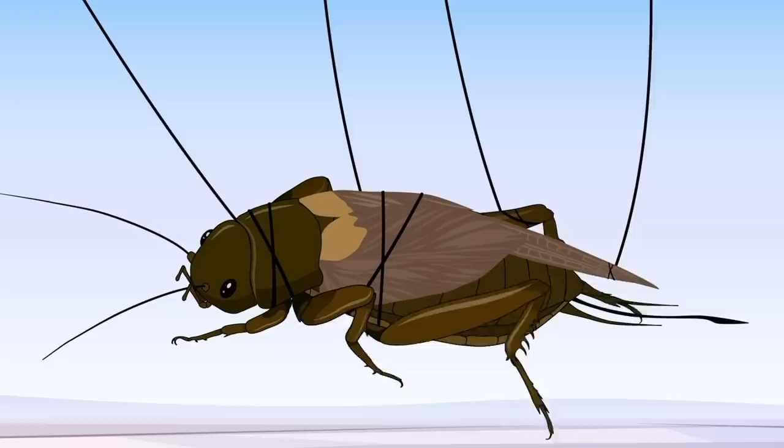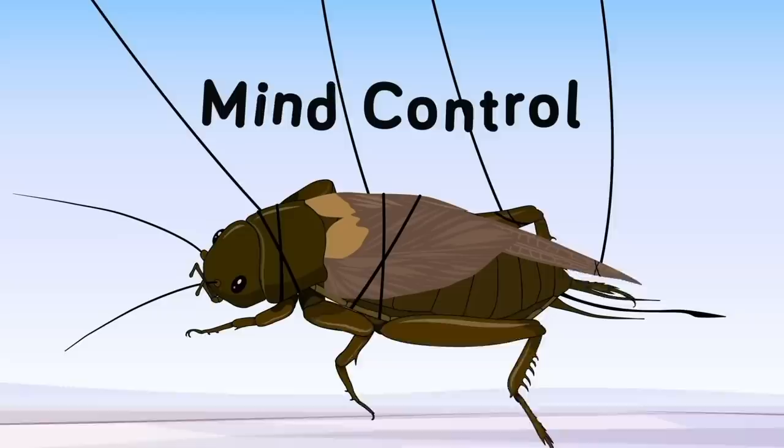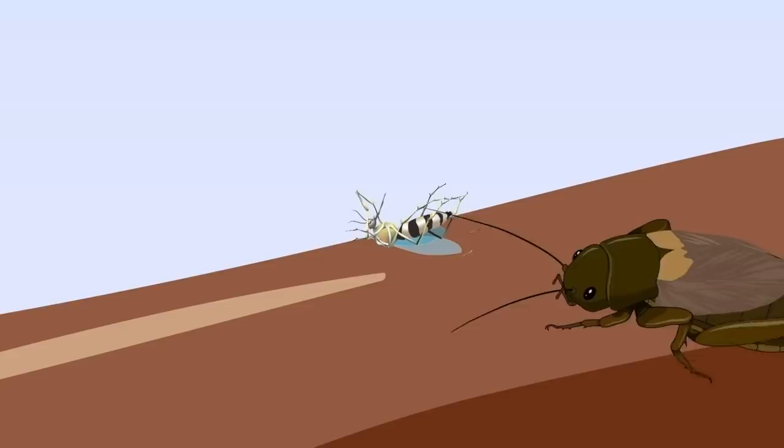Crickets, like all living things, need water to survive. Instead of obtaining it from dangerous rivers or ponds where they might be eaten, crickets tend to acquire their H2O from dewdrops, plants, and other smaller insects that they eat. If the crickets consume something that has been infected with the hairworm larva, it's the beginning of the end for that insect.